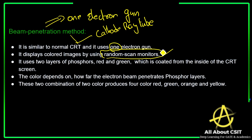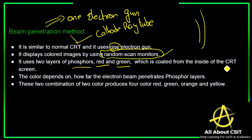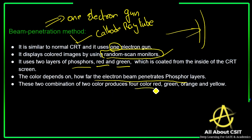In the beam penetration method, only one electron gun is used and it displays colored images only using random scan monitors. It uses two layers of phosphorus — one red and one green — coated from the inside of the CRT screen. The color depends on how far the electron beam penetrates the phosphorus layers, which depends upon its speed. These two colors produce four colors: red, green, orange, and yellow.